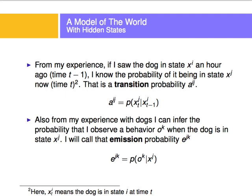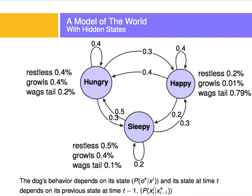With all those variables and knowing these probabilities, I can model the world of the dog. The dog can be hungry, happy, or sleepy. If the dog is hungry, there's a 40% chance it's restless, a 40% chance it growls, and a really small chance it actually wags the tail. The dog will show restless behavior given that it's hungry 40% of the time.